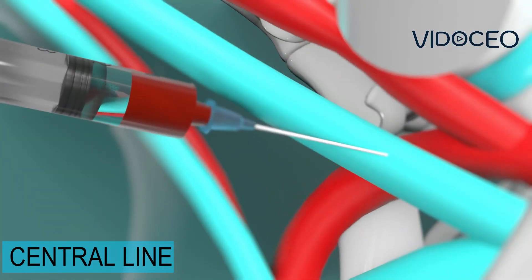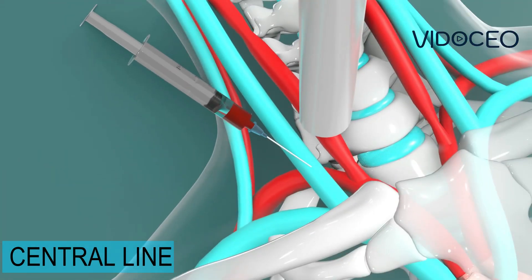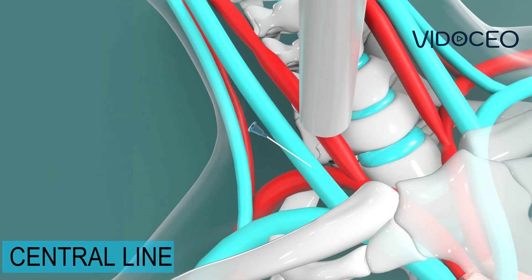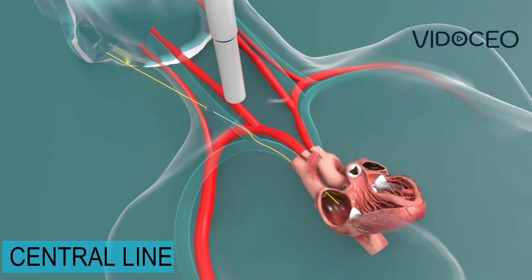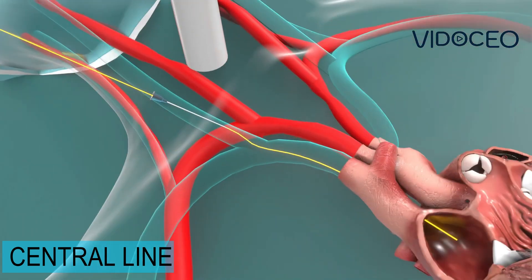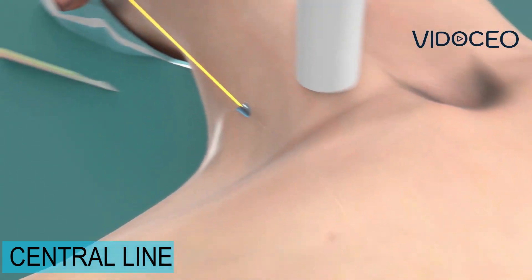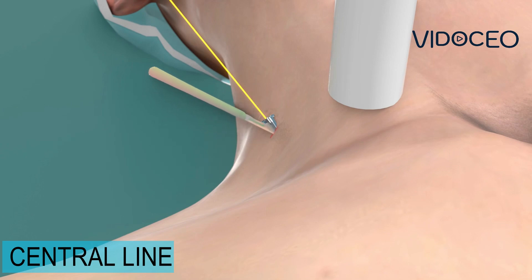Once the needle tip is in the vein, a wire is placed into the vein and down into the chest. Often the skin needs a small incision made to allow the catheter to fit.